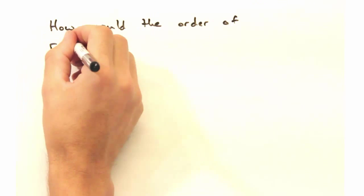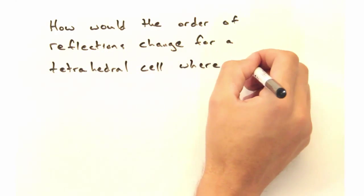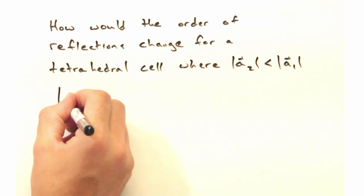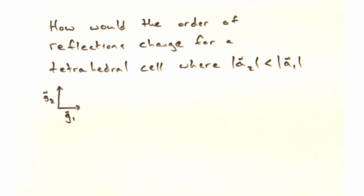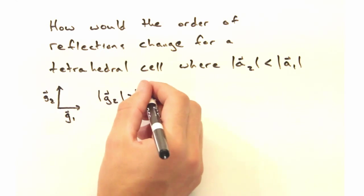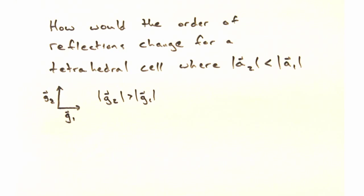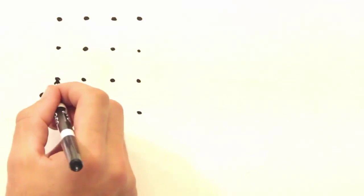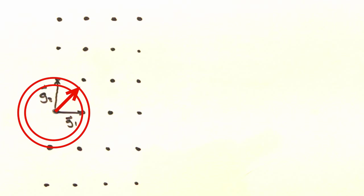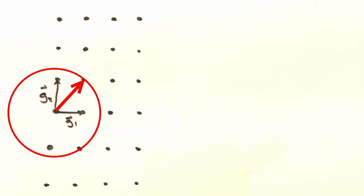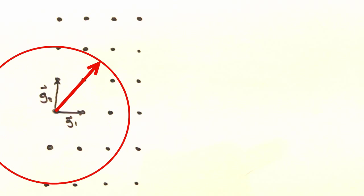But let's try something not as simple as a square. Instead, how would the order of reflections change for a tetragonal cell, where the a2 axis is slightly shorter than the magnitude of a1? Because the a2 axis is the shortest in real space, when we draw the reciprocal lattice, g2 will be longer than g1. With an origin at the 0-0 point, we can draw a delta k vector as so. So as we move the source and detector, delta k will cross the 1-0 reflections. Then we would see the 0-1 reflections as a separate peak. And continuing on, we'll see the 1-1, 2-0, and 0-2 reflections.